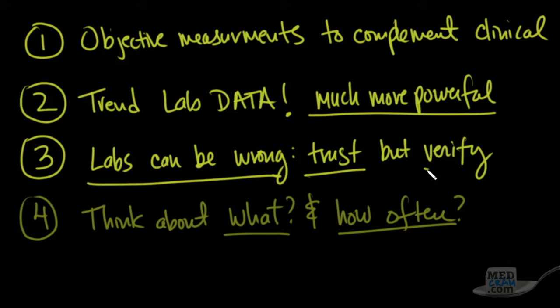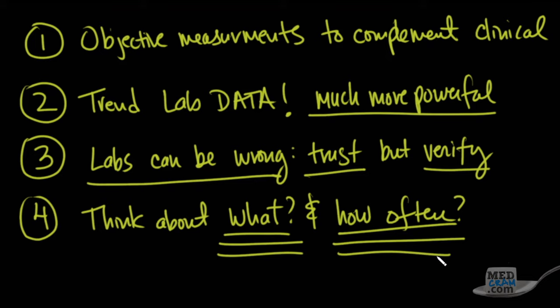Number three, labs can be wrong. So remember to trust the lab data, but to verify it. So if it looks wrong, repeat it. And then the other thing that I want you to be aware of in terms of the complexity is you've got to think about what it is that you want to see on the patient and what blood tests you want to order, but also how often you need to see it. So how often do you think it's going to change, and when do you want to know that change? Is it good to know eight hours after the event? If not, then order Q4 and be cognizant of that.